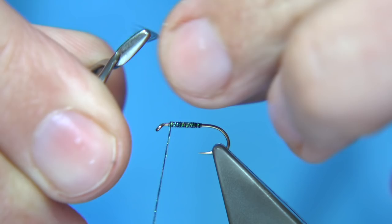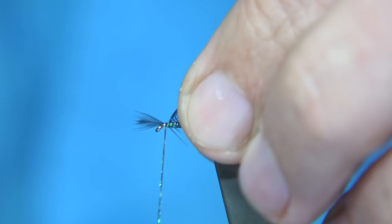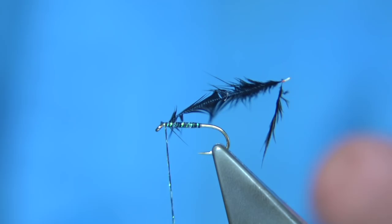Come in with two or three turns. You see, the wax gives it a lot of grip, just trim away the tip. Another turn there, just to make sure it's not going to slip. Just use the hackle pliers so you can see what I'm doing.